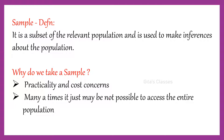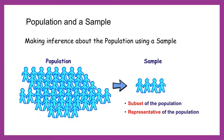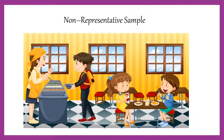Two important things about the sample: firstly, a sample should be a subset of the population, and secondly and more importantly, the sample should be representative of the population. That is, it should be an unbiased representation of what the population is like. Can you think of some example of a non-representative sample?